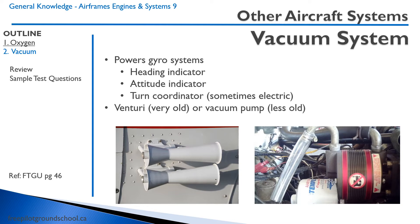There are a couple of ways to power the vacuum system. One is the Venturi — this is on the outside of the airplane. As you pick up speed after takeoff, air gets forced through the Venturi and creates a vacuum to power the gyros. A slightly more modern option is a vacuum pump, which is driven by the engine. And obviously the modern stuff is all electronic.